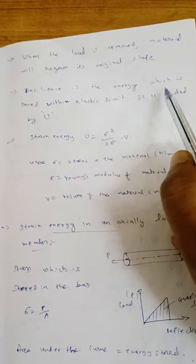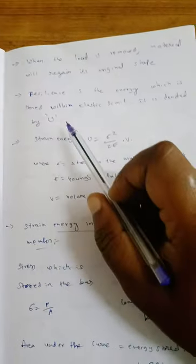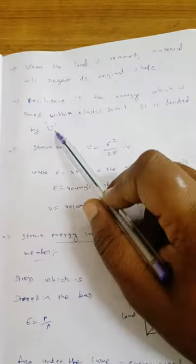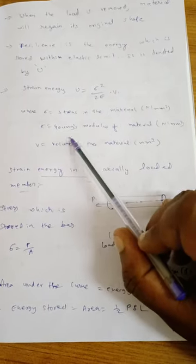Resilience is the energy which is stored within the elastic limit. It is denoted by strain energy U. So energy is nothing but resilience, which is nothing but work done. The formula for strain energy is U = σ² / 2E × V, where σ is stress in the material in N/mm², E is the elastic modulus in N/mm², and V is the volume of the material in mm³.